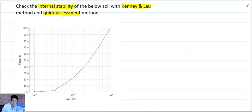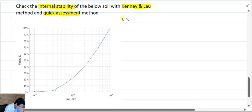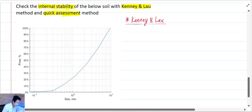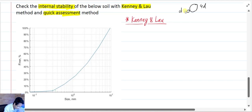Now let's go for the Kenny and Law method first. The idea of Kenny and Law method is if a particle of size D can be transported, it's going to be kept by the particle of size 4D. They will form a small constriction that doesn't let the particle of size D pass through.